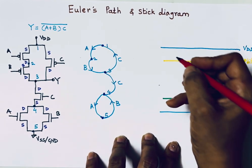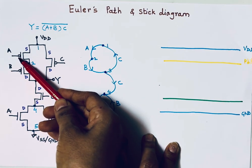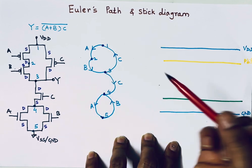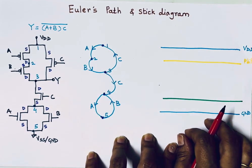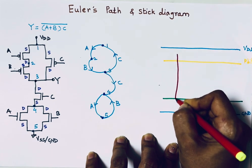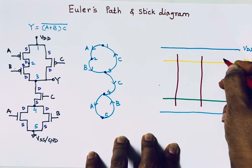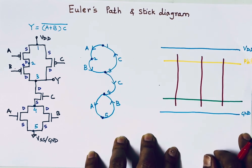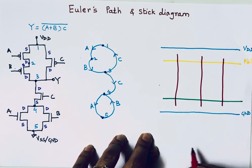We have three P-channel MOSFETs — A, B, C — and three N-channel MOSFETs — A, B, C. So I'll draw three PMOS and three NMOS. A single transistor in a stick diagram can be represented as a plus sign, where one line is drain, one is source, and the crossing line is the gate terminal.